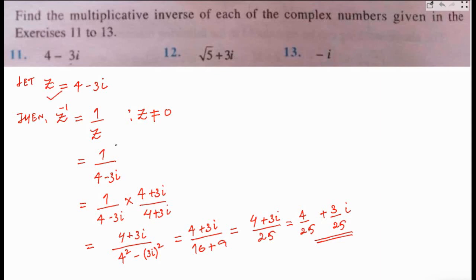So the multiplicative inverse of z equals 4 minus 3i is 4/25 plus 3/25 i. Now let's move to question 12.